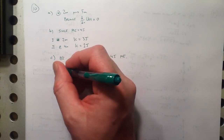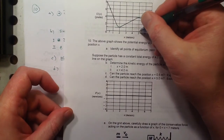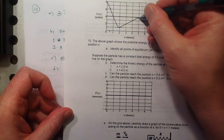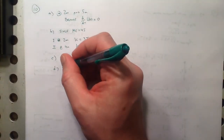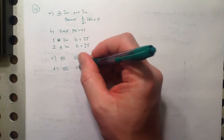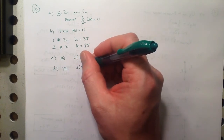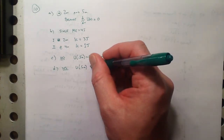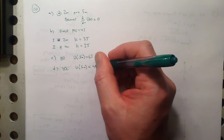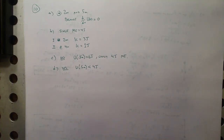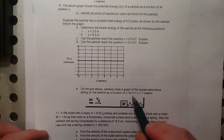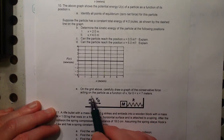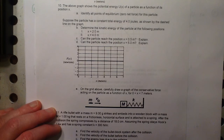Part D: can the particle reach the position at five meters? Yes, because the potential energy at five meters is clearly less than four joules, so the total mechanical energy is sufficient to get there.